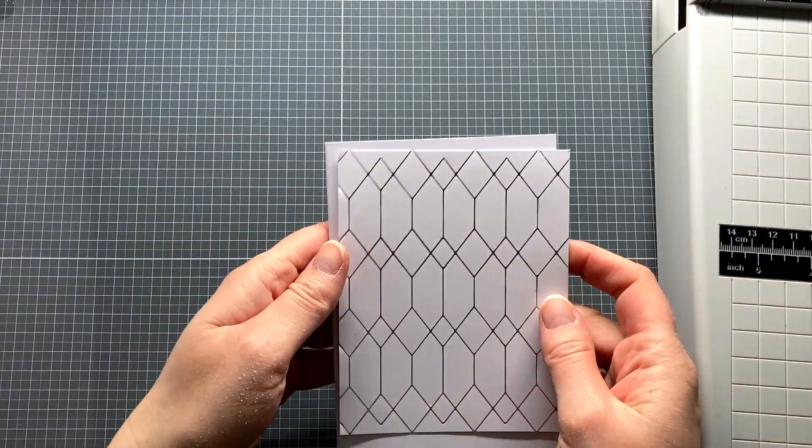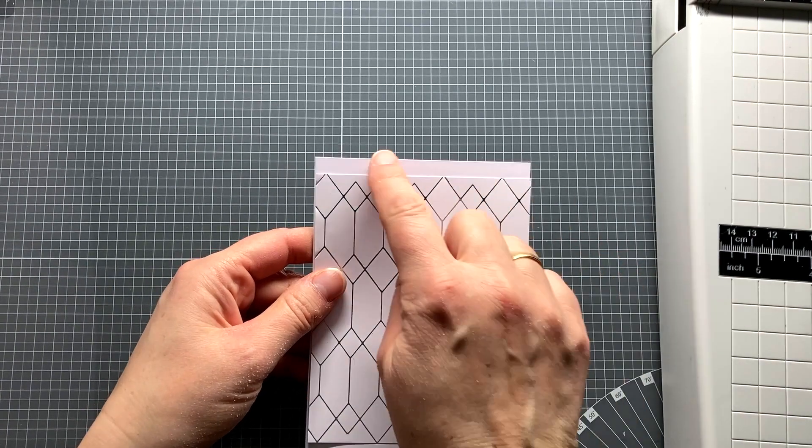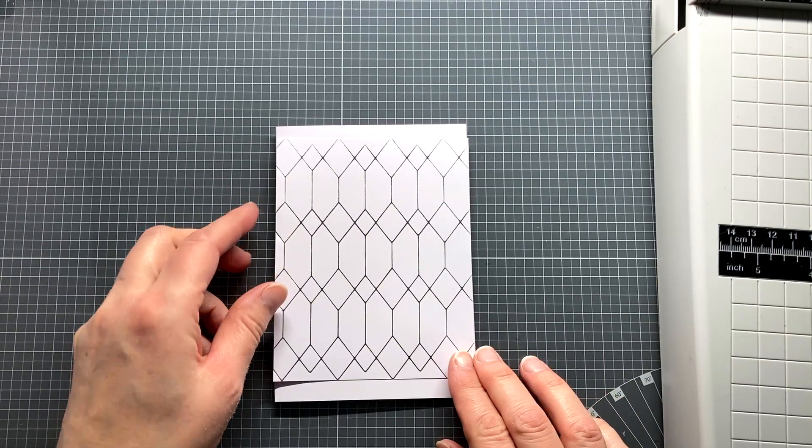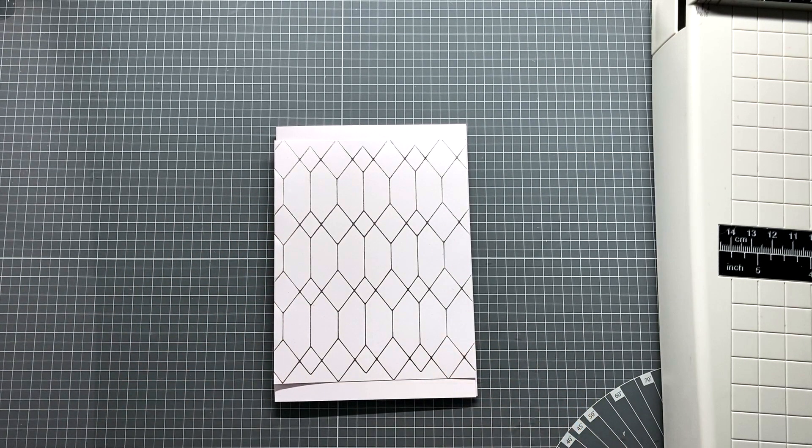Then of course I have a border left over at the top and bottom. You can leave it as it is, or color it, or glue a border on top or underneath. You'll see later how to fix this.